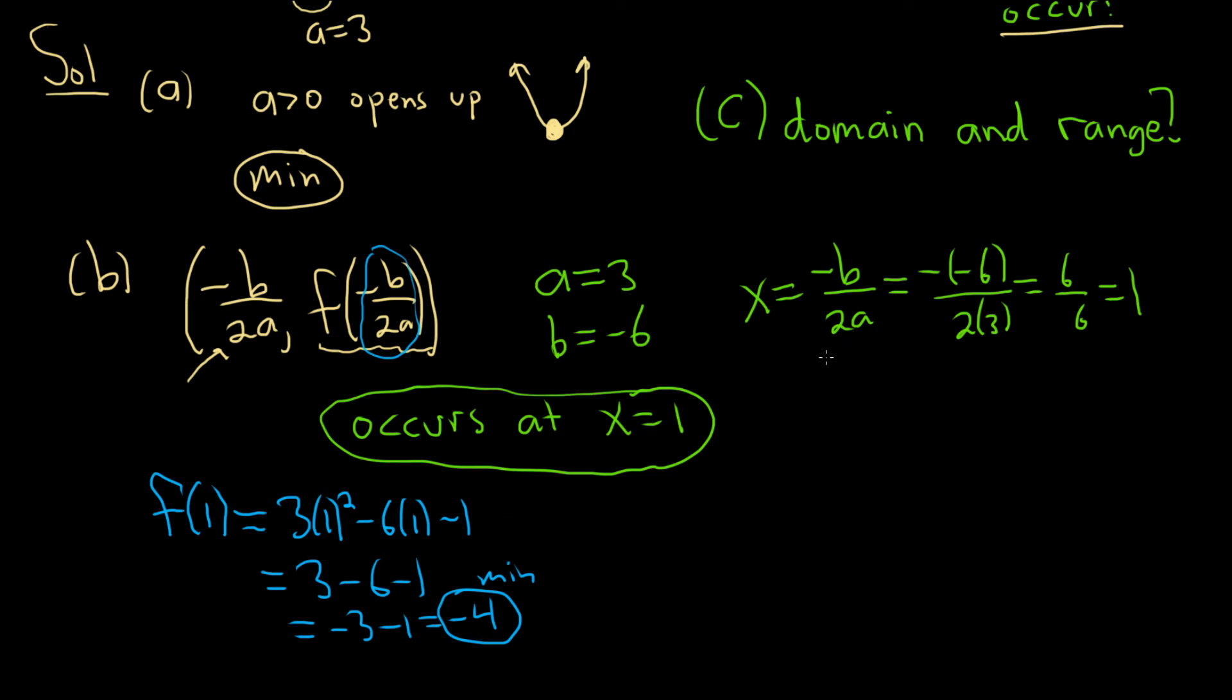The last part wants the domain and range. So we know that our graph is going to look like this. And we know that this point here is going to be 1 negative 4.